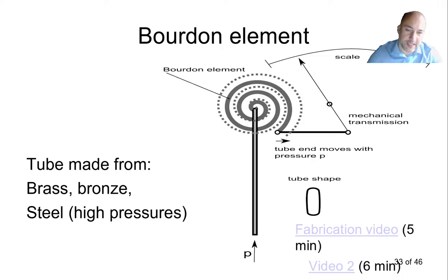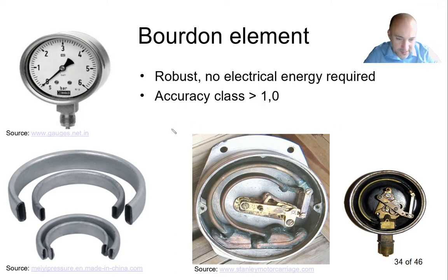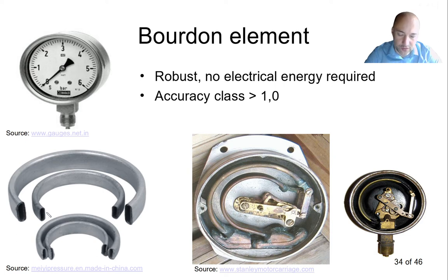The first device is quite often used — the Bourdon element pressure gauge. Looking at photographs, we can see a Bourdon element here. The Bourdon element is nothing else than a tube that has been flattened, and this tube changes its shape with pressure. We connect the measured pressure on one side of the tube. The other end is sealed, and if the internal pressure increases the Bourdon tube tries to straighten itself. We detect this change of shape.